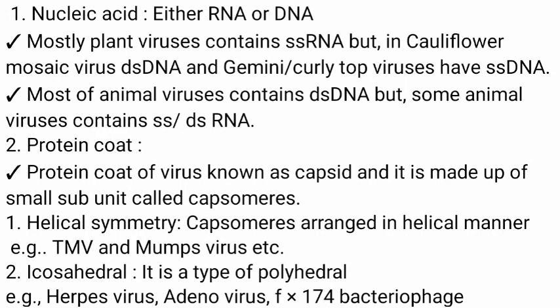The protein coat of a virus is known as the capsid, and it is made up of small subunits called capsomeres. Helical symmetry: capsomeres arranged in a helical manner — example: TMV and mumps virus. Icosahedral symmetry is a special type of symmetry seen in polyhedral viruses — examples: Herpes virus, Adenovirus, ΦX174, bacteriophages.